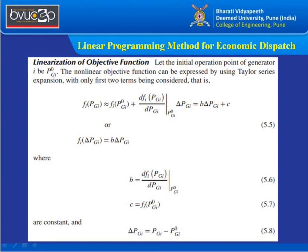Now for the linear programming method: since the objective function is non-linear, we linearize it. Given an initial operating point Pgi0, using Taylor series expansion, the function fi(Pgi) ≈ fi(Pgi0) + (dfi/dPgi)|Pgi0 · ΔPgi, expressed in terms of constants b and c. The incremental variable is ΔPgi = Pgi − Pgi0, the difference between the current value and the initial operating point.